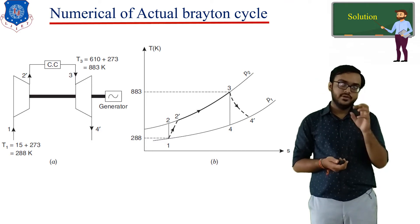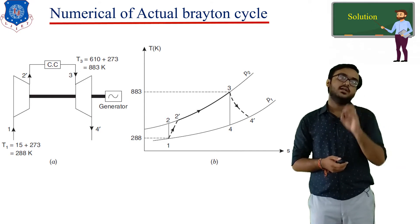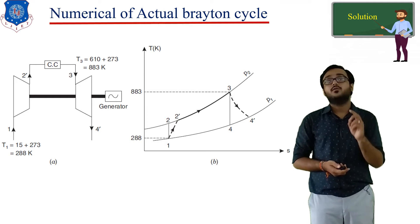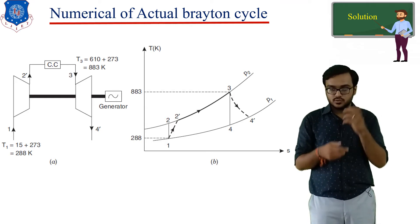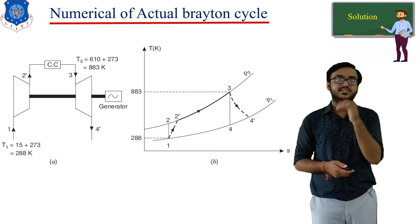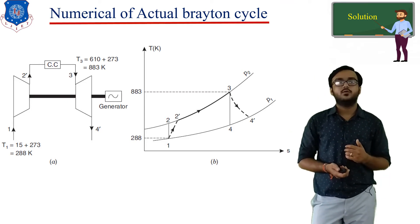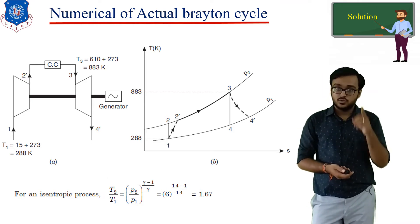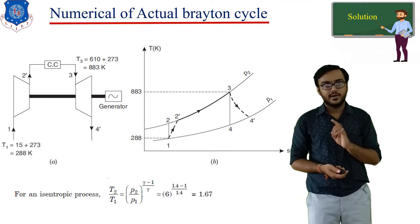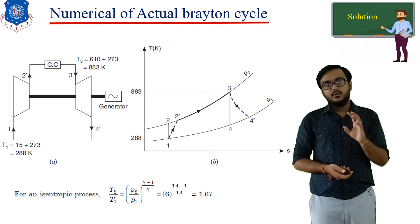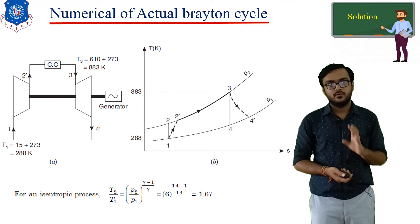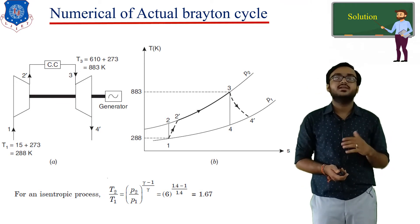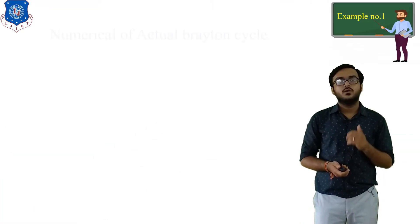Based on this, we need to find all temperatures: T1, T2, T3, and T4. From the given data, we have only T1 and T3. We need to find T2, T2 dash, T4, and T4 dash — four different temperatures. To find T2, use the basic thermodynamic isentropic relationship: T2 by T1 equals (P2 by P1) raised to (gamma minus 1) over gamma. For the compression process, gamma is 1.4 as provided in the data. Calculating this, you get T2 by T1 equal to 1.67, and simplifying further, T2 equals 481 K.